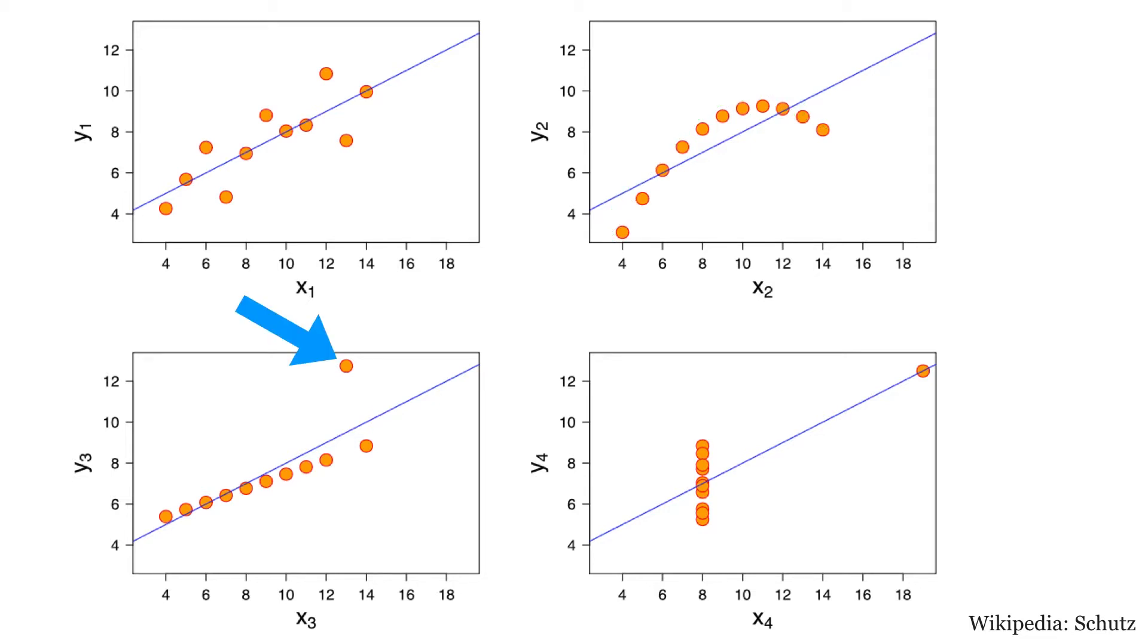And the last one is an interesting example that shows how a single outlier can completely skew the summary statistics. If you ignore the outlier, there is no correlation whatsoever between two variables.